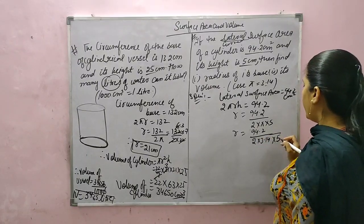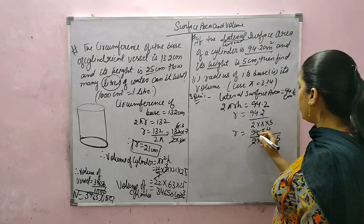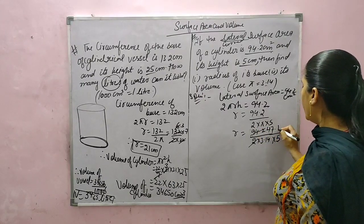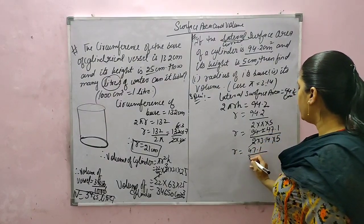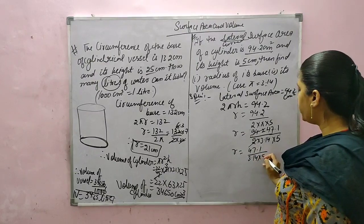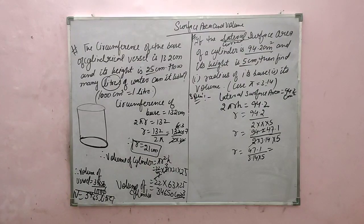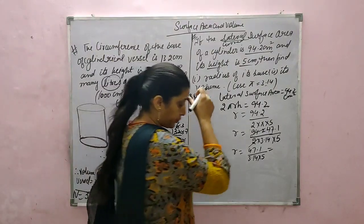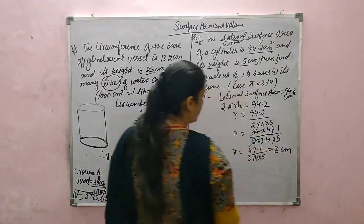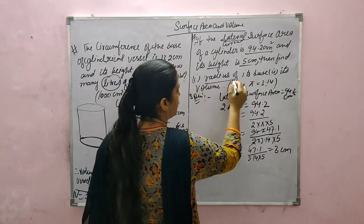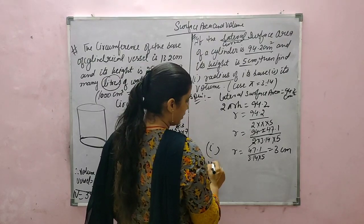Solving: R equals 94.2 upon (2 into 3.14 into 5), which gives R equals 47.1 upon (3.14 into 5). After solving this whole expression, R equals 3 cm. That covers the first part — the radius of its base. The second part is to find the volume.